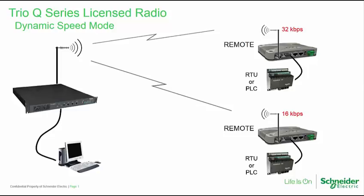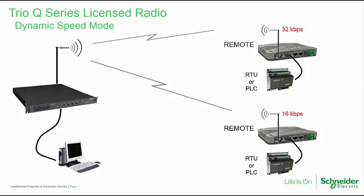Traditional narrowband data radios achieve reliable wireless communication over long distances by transmitting at low data rates, typically 9600 bits per second or less. At shorter distances, they may be able to operate at a faster data rate. However, the speed across the entire system is fixed, based upon the speed demanded by the most distant site.